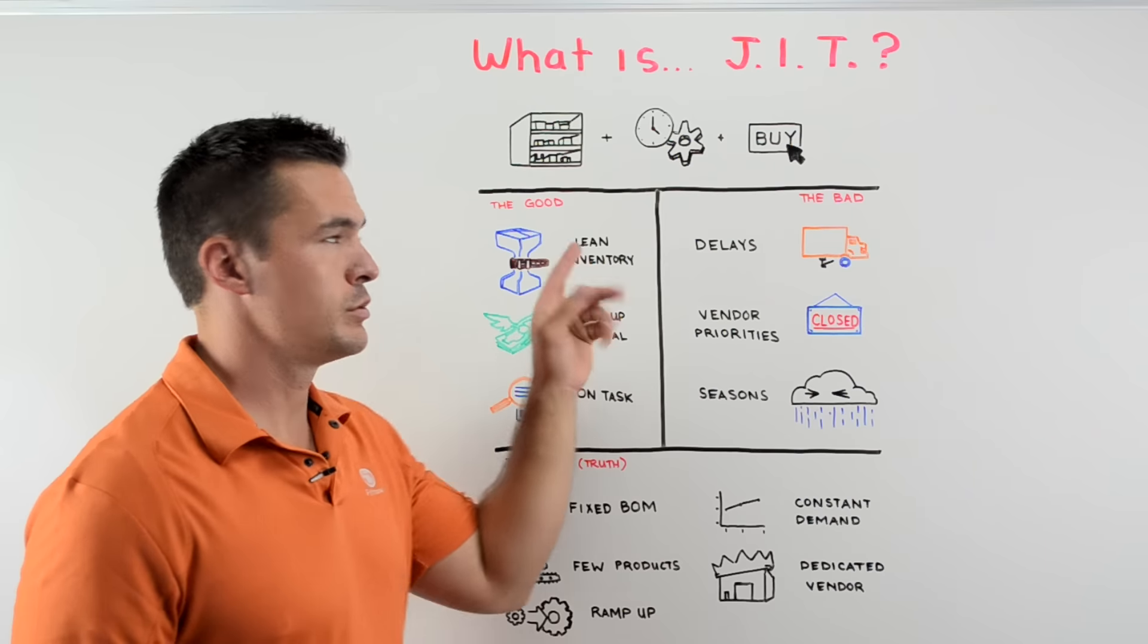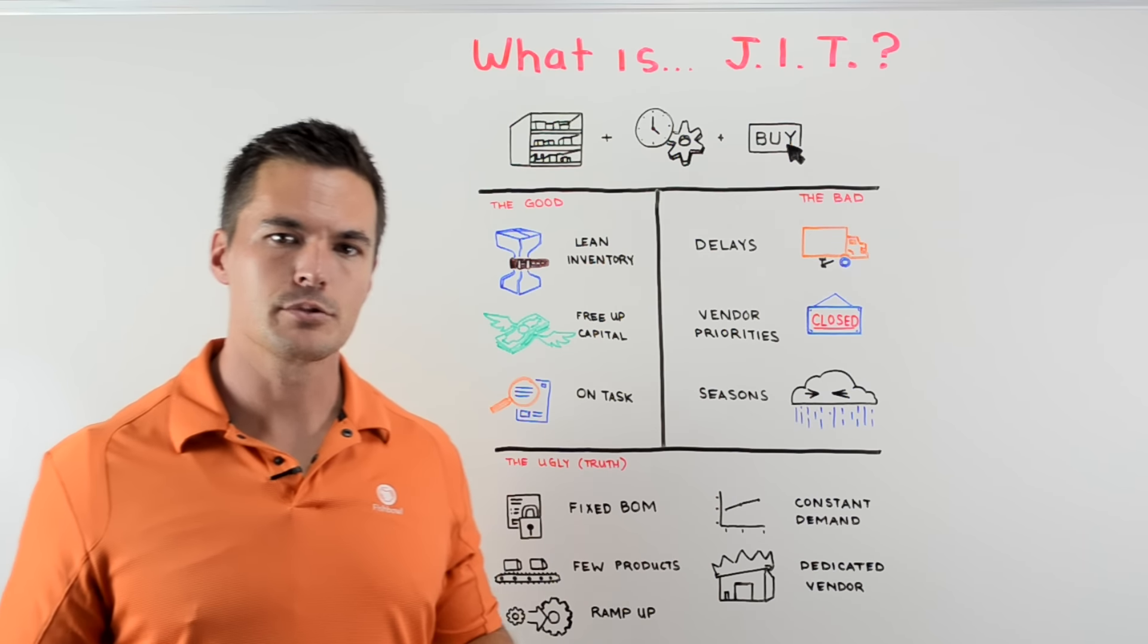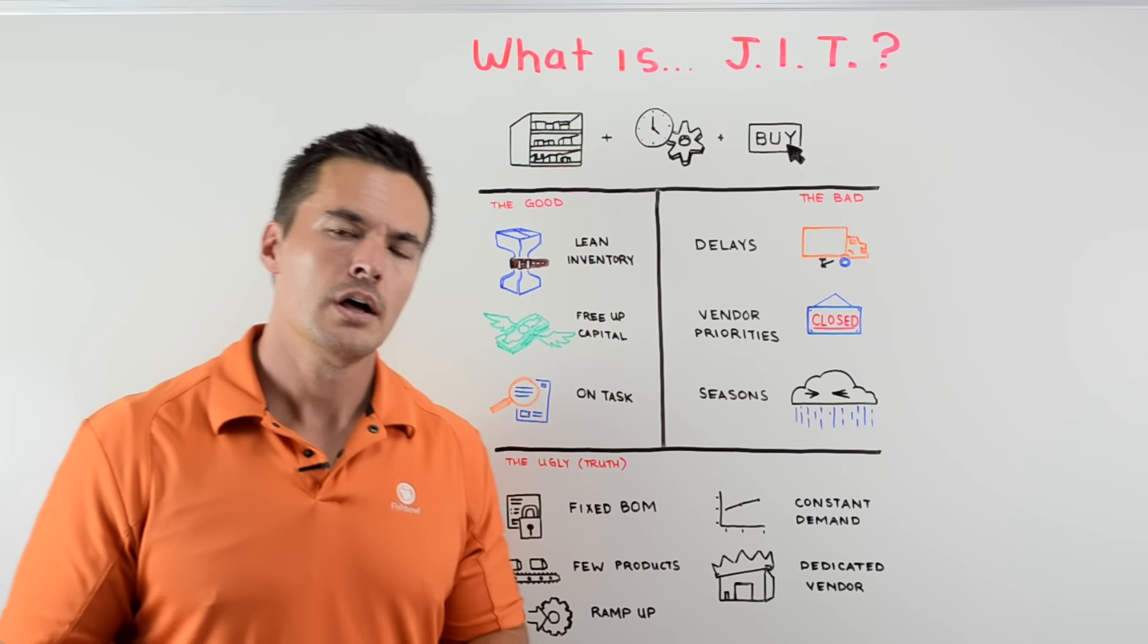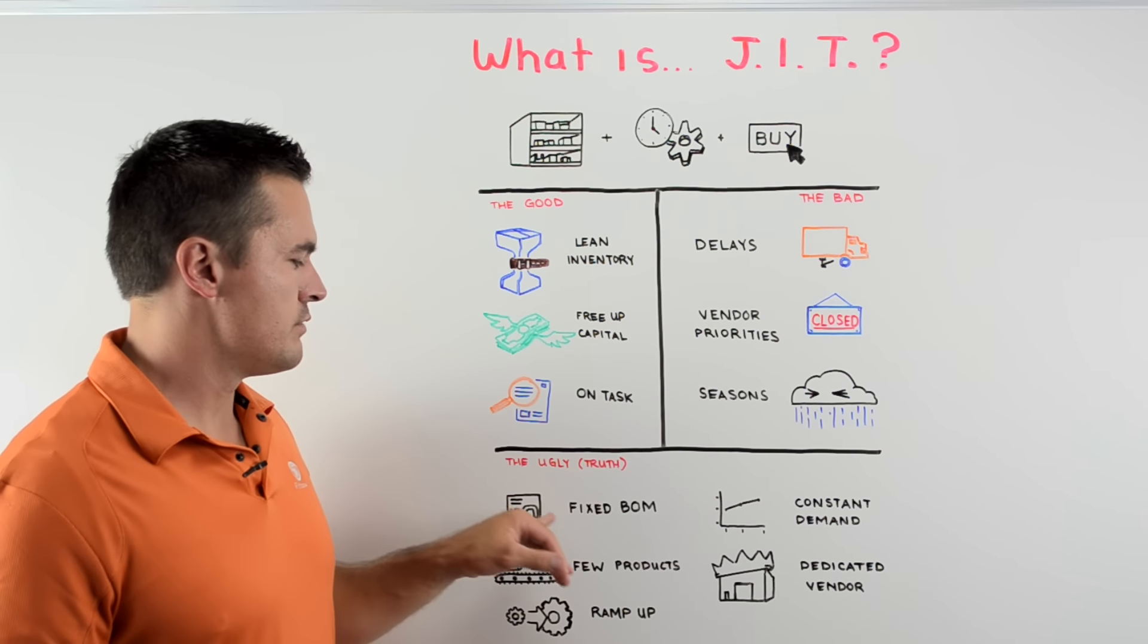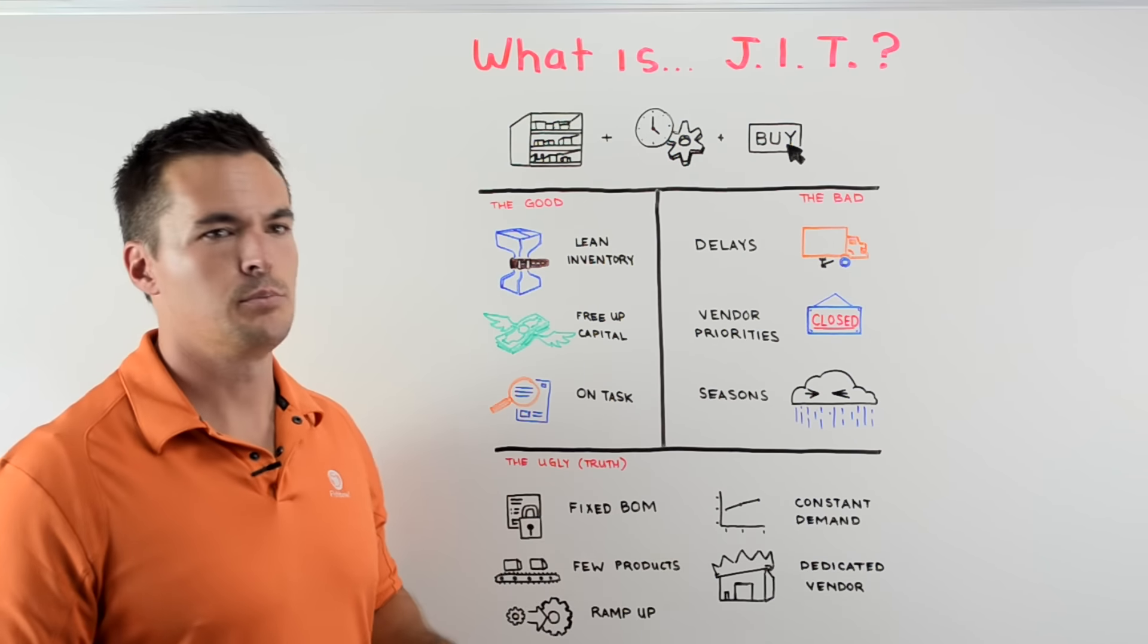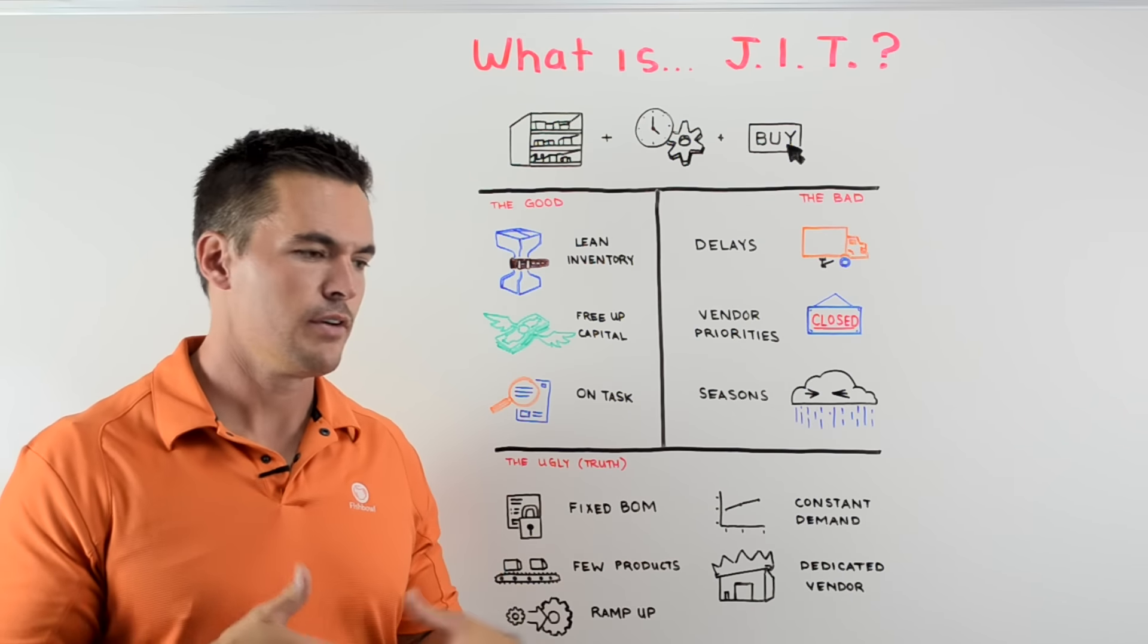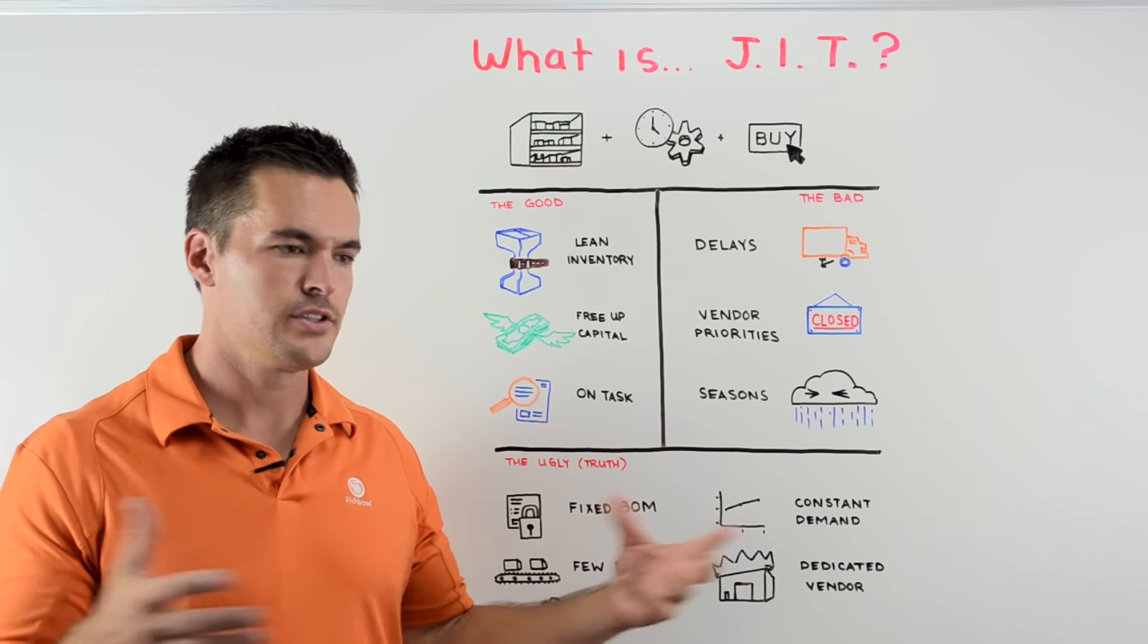So here's the ugly truth about just in time. Yeah, it sounds great to keep a lean inventory and only make something when it's ordered. But the only way that works is if you as a company have fixed bills of material, if you make a very few select products. If you have all this diversity, man, you're going to have a real headache trying to do just in time.